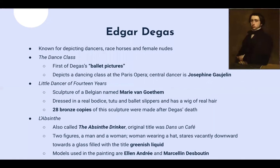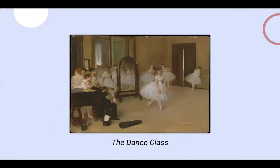Lastly, let's talk about L'Absinthe, another pretty famous work by Degas, also known as The Absinthe Drinker. Its original title is Dans un Café, meaning 'in a French cafe.' The work shows two figures — a woman and a man — sitting in the center. The man is looking to the right, and the woman, dressed more formally with a hat, is staring downward with a glass of greenish liquid absinthe on the table in front of her. The scene represents the increasing social isolation occurring in Paris during its rapid growth. The models used were Ellen André and Marcellin Desboutin.